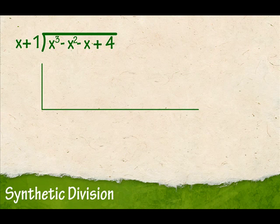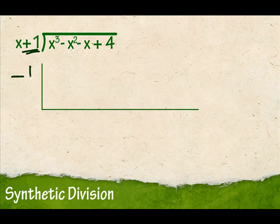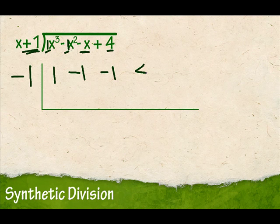Instead of using long division, let's use synthetic division. The first thing I did was I made this half box right here. I look here and I write the opposite of what I see. Since I see a positive 1, I'm going to write a negative 1. Then what I write in here is my numbers — not the variables, just the numbers. So this is a 1, this is a negative 1, this is a negative 1, and this is a 4.